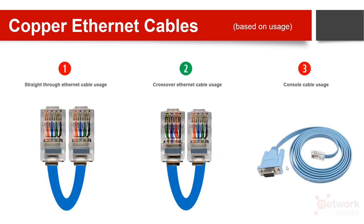Physically, the console cable has a DB9 connector — a nine-pin connector — on one end, and an RJ45 on the other end. The RJ45 end plugs into the router or switch, and the DB9 end connects to the PC. If the device supports DB9 directly it inserts straight in; if not, there are also USB-type console cables available these days, though they require a driver.